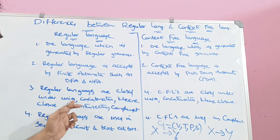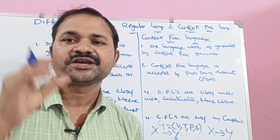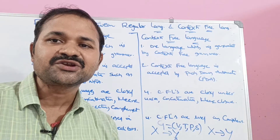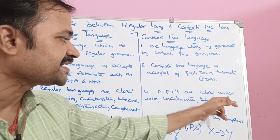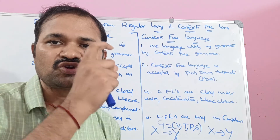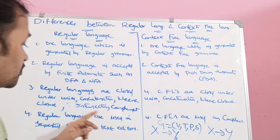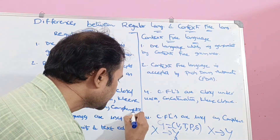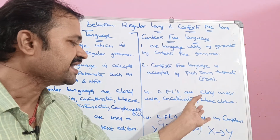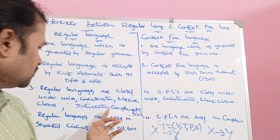The third difference: regular languages are closed under five properties — union, concatenation, Kleene closure, complement, and intersection. Context-free languages are closed only under union, concatenation, and Kleene closure. Context-free languages are not closed under intersection and complementation, whereas regular languages are closed under all five properties.